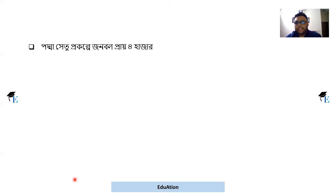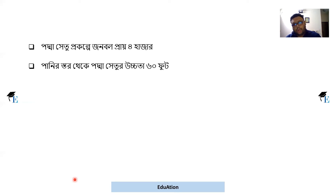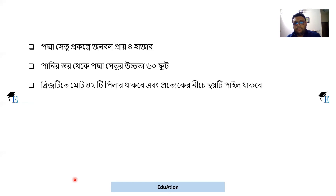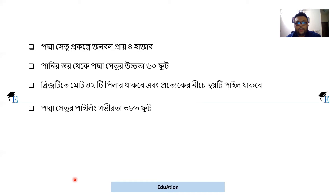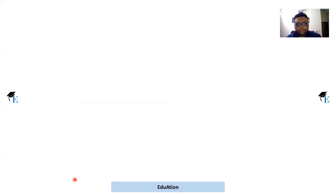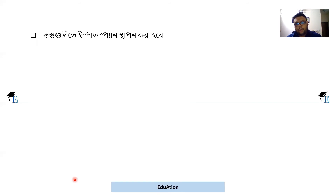દરકાર હાય પ્રકે ચાર હાજાર — approximately four thousand workers are required. A very important question for any exam: the height of the Padma Bridge from water level is approximately — સ્થાપણ કરા હવે — the pillars have been installed.